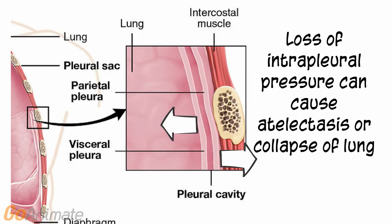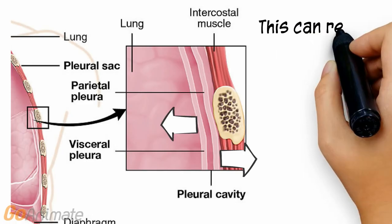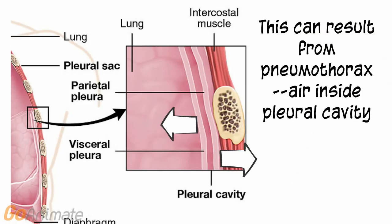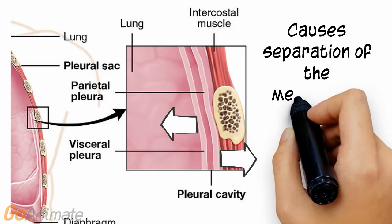Loss of intrapleural pressure can cause collapse of the lung, or atelectasis. Lung collapse can result from pneumothorax, or air inside of the pleural cavity.